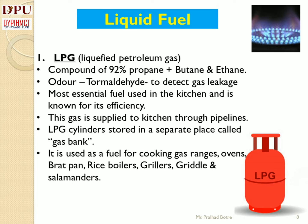LPG is available in various shapes and sizes. In hotels, it is supplied through pipelines and also requires a separate storeroom for storing gas cylinders, called a gas bank. It should be at least 50 meters away from the hotel premises. For any catering establishment, it is mandatory to follow all government rules and regulations. LPG gas is used in the kitchen for gas ranges, ovens, brat pans, rice boilers, grillers, griddles, etc.